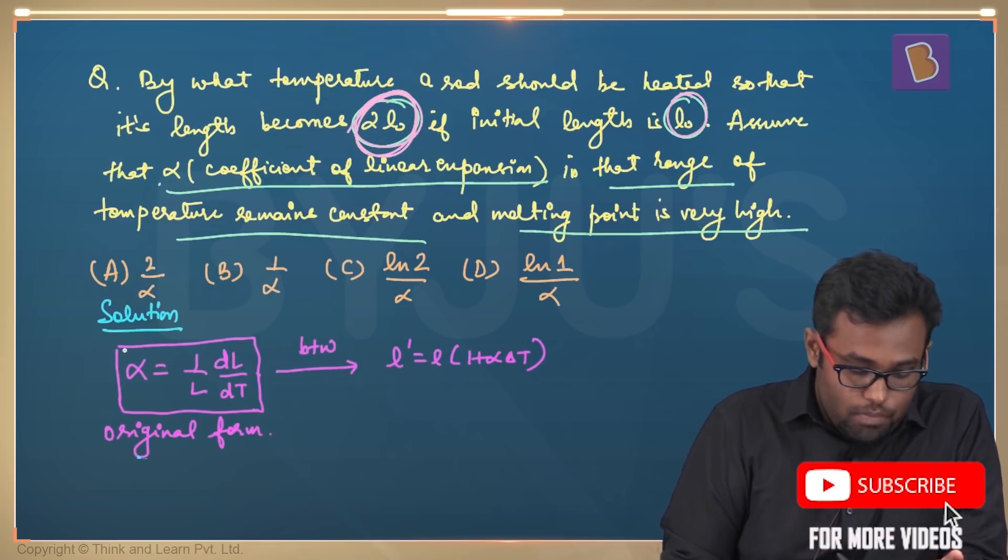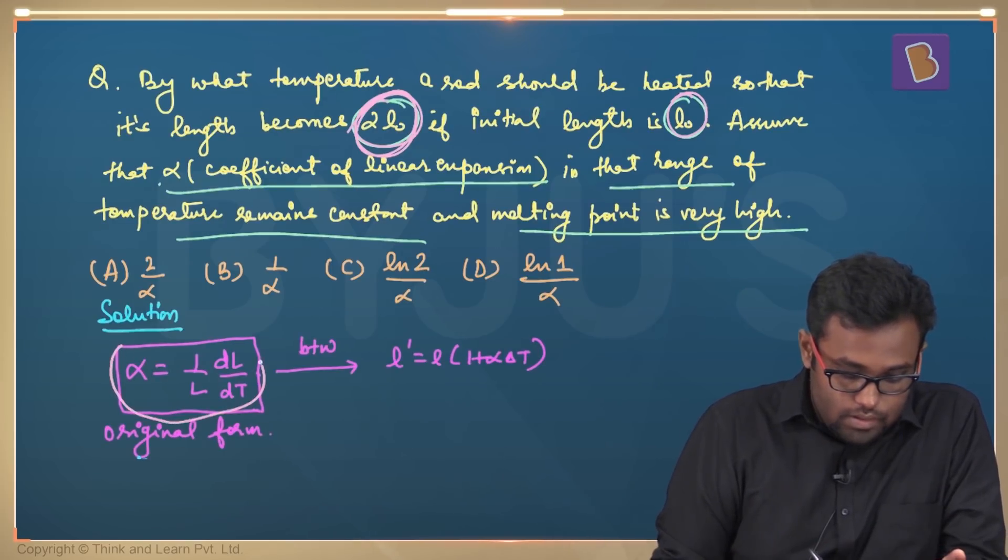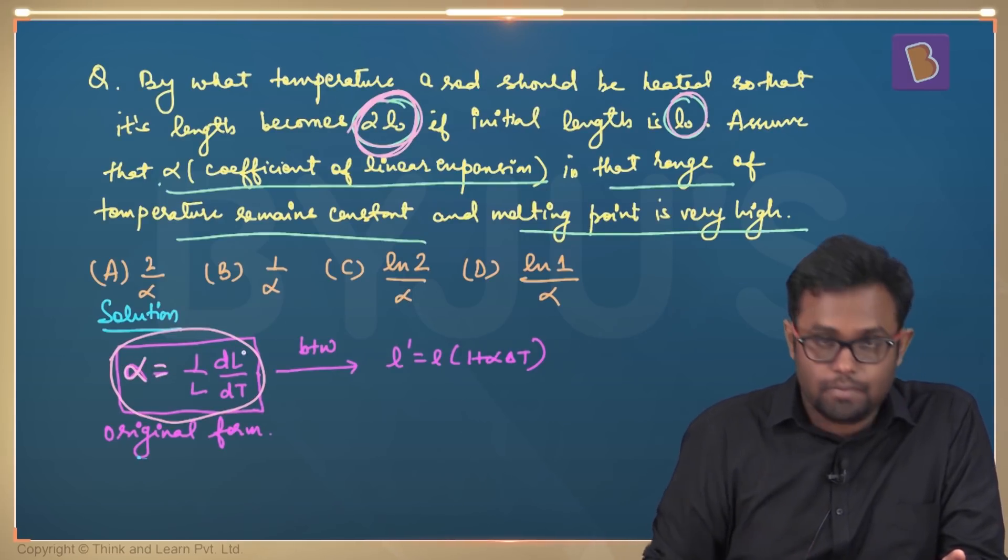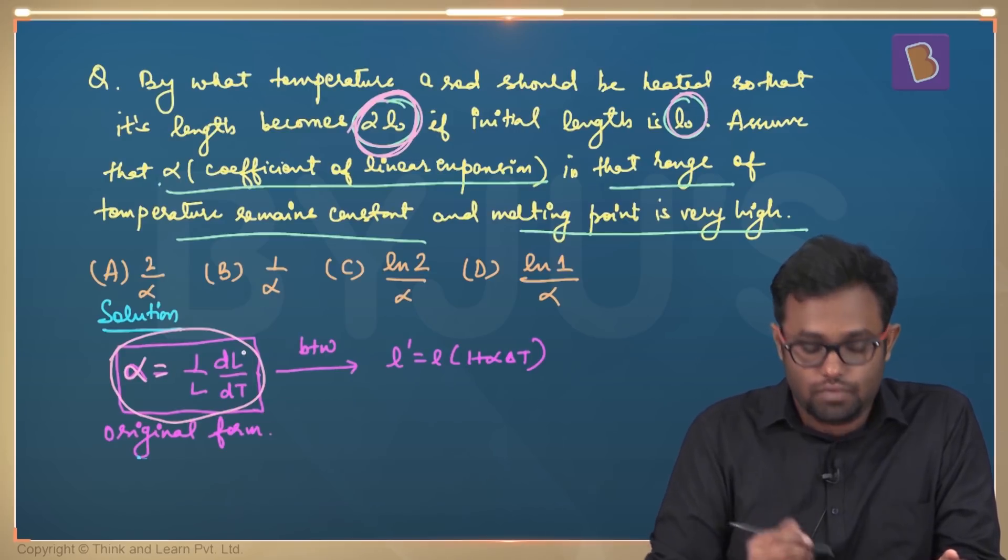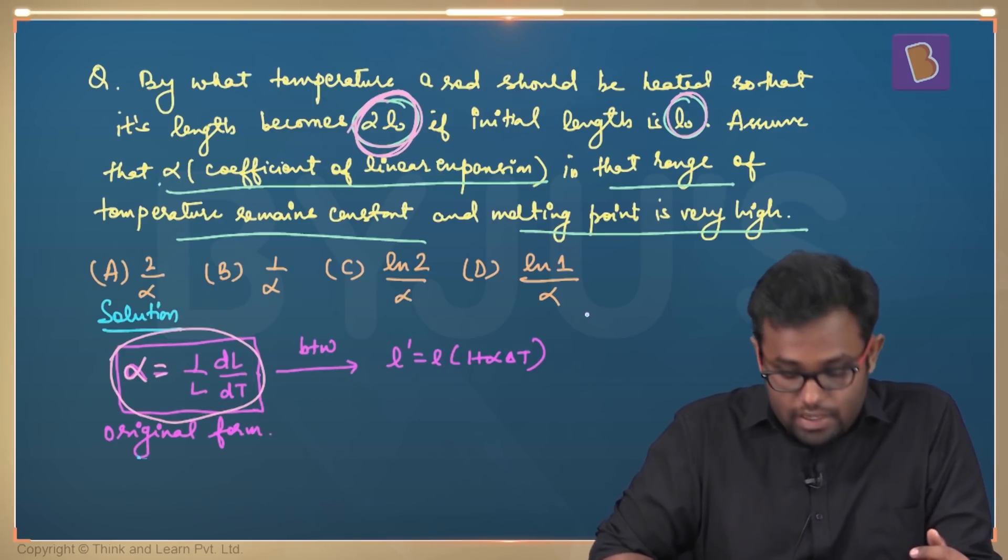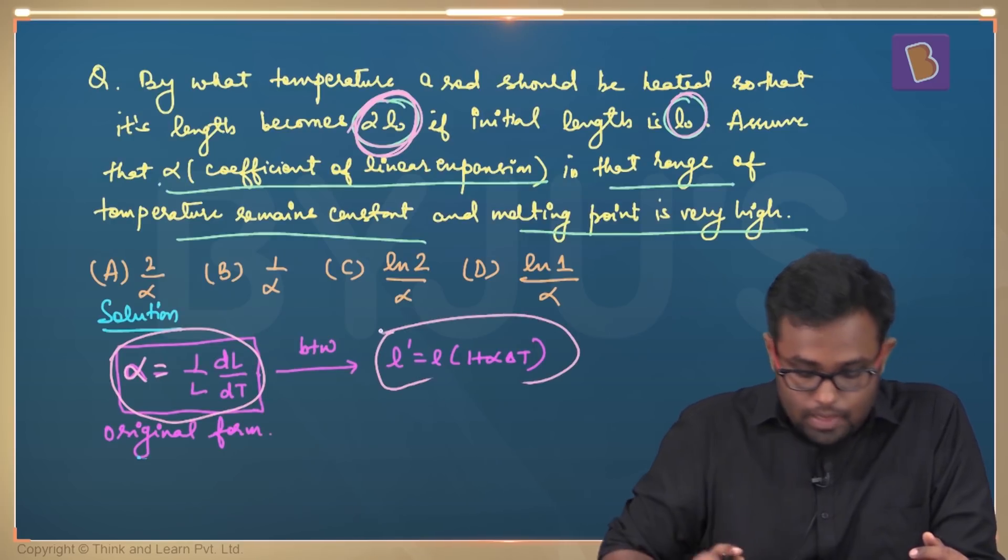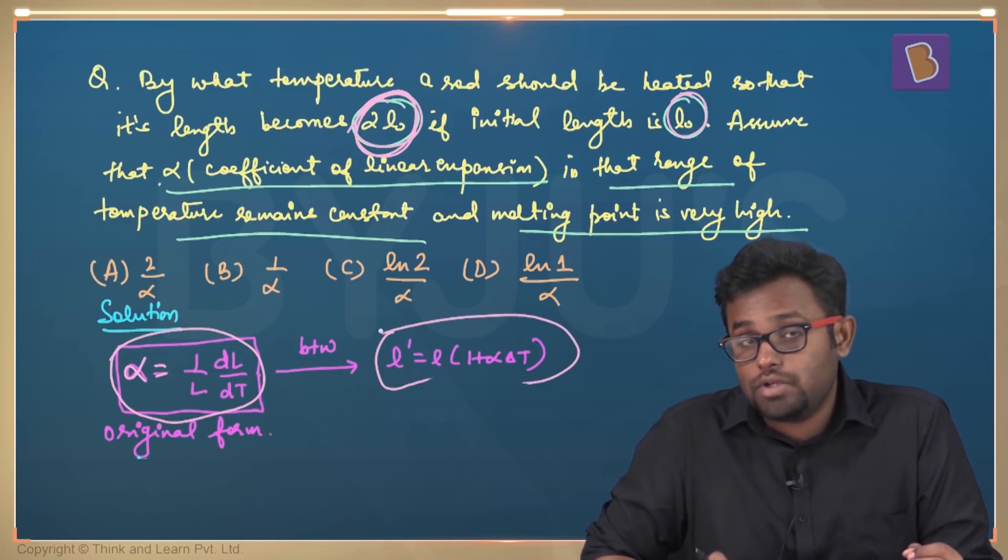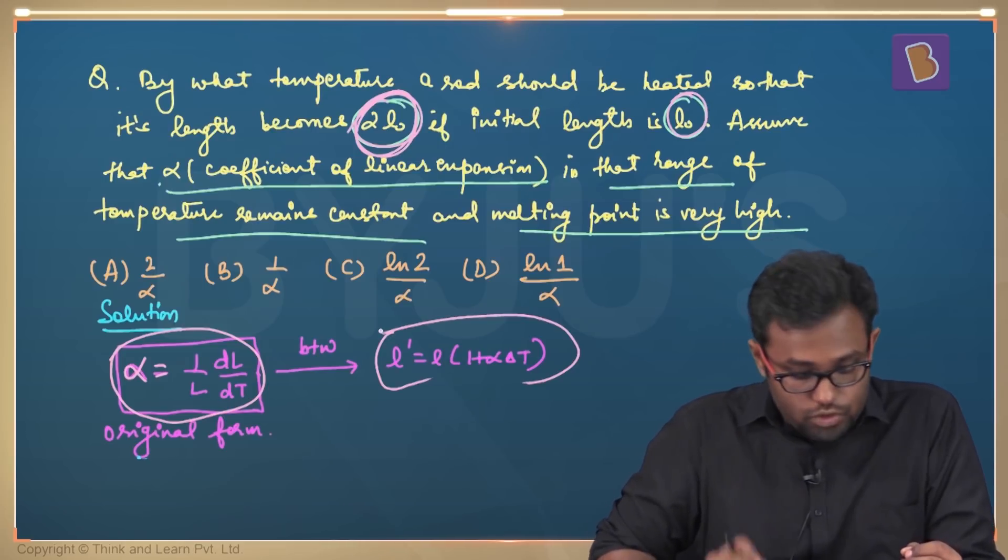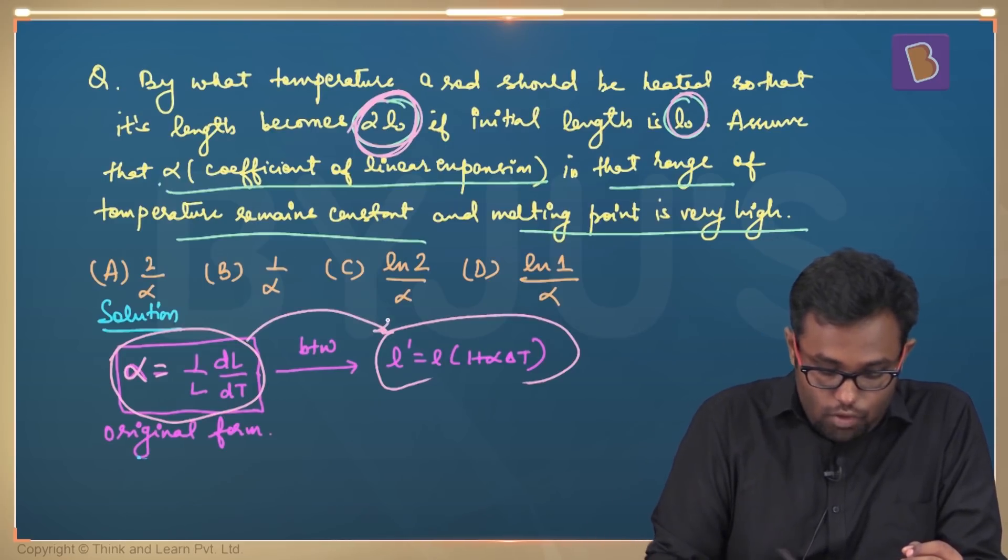The original form of the expansion formula is alpha equals 1 by L DL by DT. This is also the definition of alpha. And from there we derive L dash equals L1 plus alpha delta T, which is an approximation of this original formula.